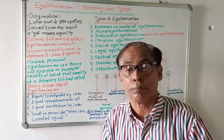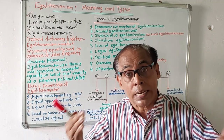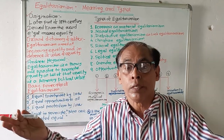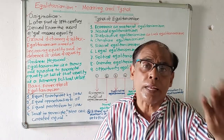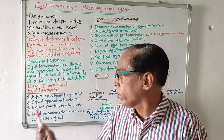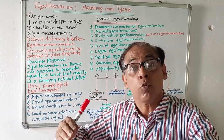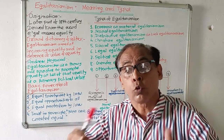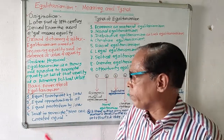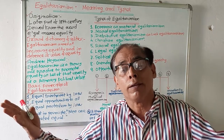There are five pillars of egalitarianism. The first pillar is equal treatment by law — law will treat all equally. The second is equal opportunity to all — all the people will be given equal opportunities to excel and equal facilities to prosper, and at the time of giving opportunities there will not be any favoritism.